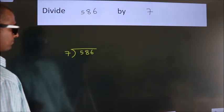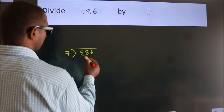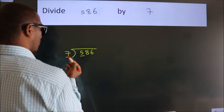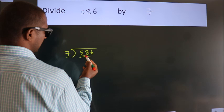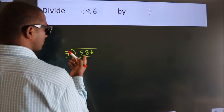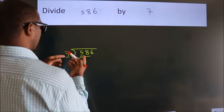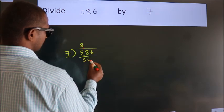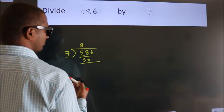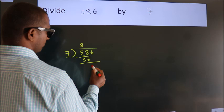Next, here we have 5, here 7. 5 is smaller than 7, so we should take two numbers: 58. A number close to 58 in the 7 table is 7 times 8, which is 56. Now we should subtract. We get 2.